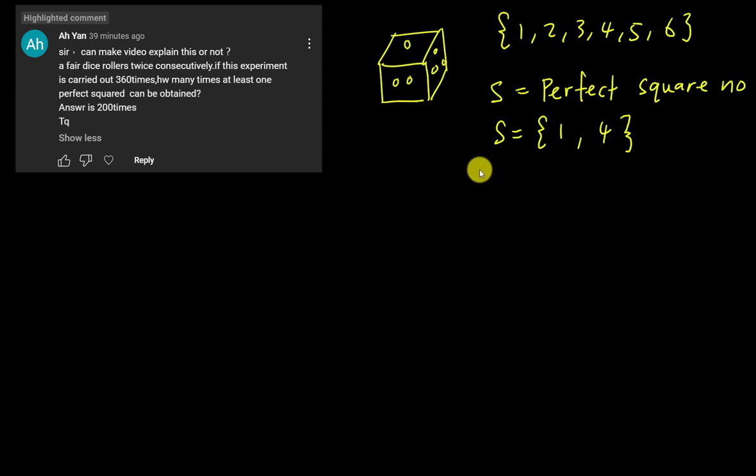And I know 4 is a perfect square number because you square root 4, you get 2. And then the other numbers, like 5 and 6, you square root them, you get decimal. So yes, therefore I only have 2 perfect square numbers out of the 6 here.